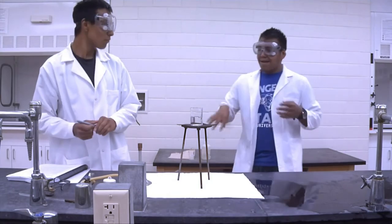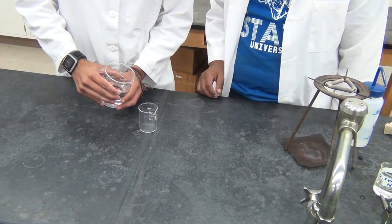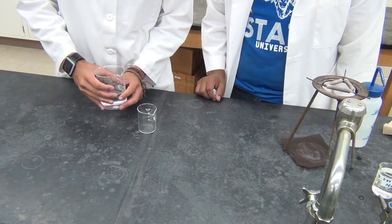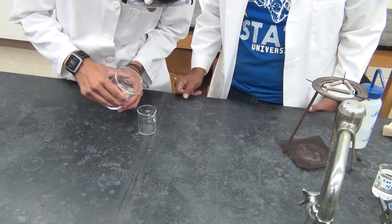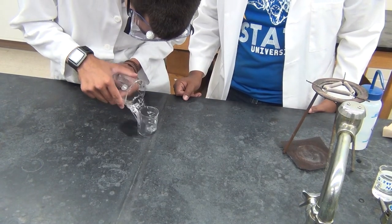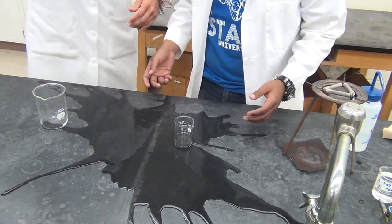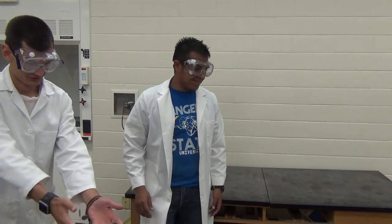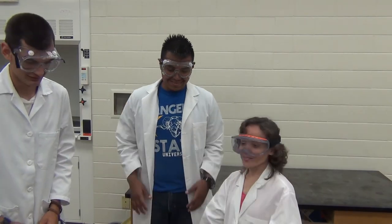Notify the lab instructor of any spills which occur during the lab. Minor spills can be cleaned up by students, but do not try to clean up reagent or solvent spills yourself. Some of these materials require special care in their disposal. Clean up any spills immediately.